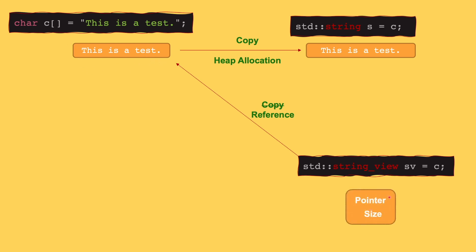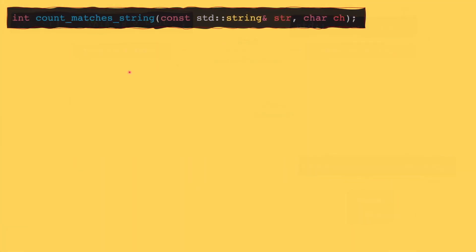Basically, internally, string view has a pointer, and when you do this assignment, the constructor assigns the value of this pointer to the beginning of the same C-style string. It also has a size and sets the size to the size of this string. So this way, we avoided heap allocation. Instead, we just reference the same buffer inside this class, which acts as a wrapper around our C-style string that has a pointer and a size.